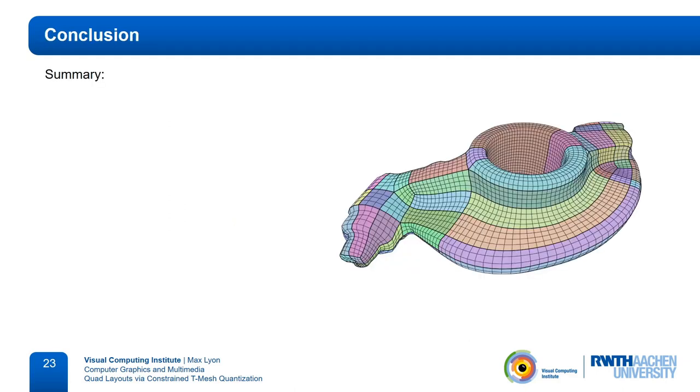Okay, to summarize, we presented an algorithm which generates coarse quad layouts. It guarantees to always find a valid solution and the layout will be free of t-junctions. Further, it can also guarantee that the layout separatrices stay within a user-specified angular bound around the original directions in the seamless parameterization. And lastly, all this is done quite fast.